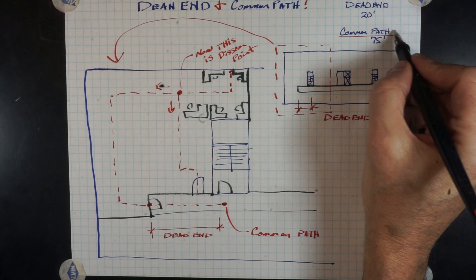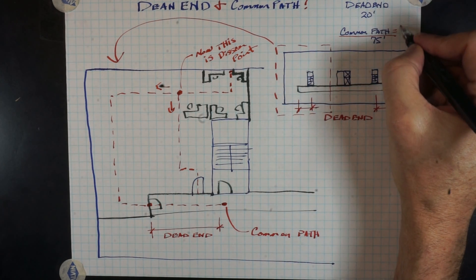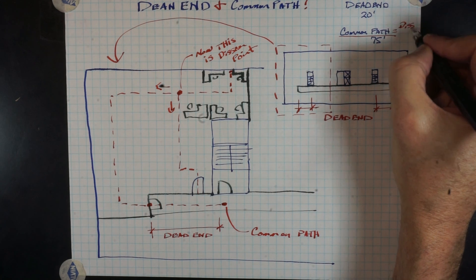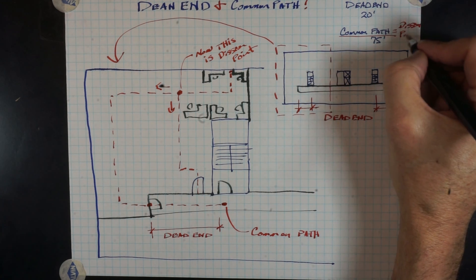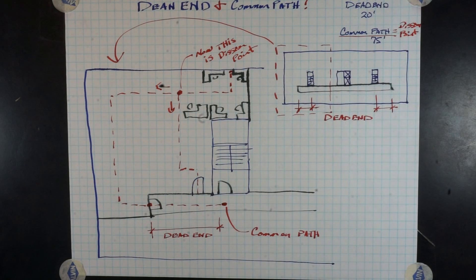That's yet another application of the understanding of different codes. But basically, where we might have a choice of two doors, where our decision point, whether to go to door A or door B, that becomes our common path of travel distance point.